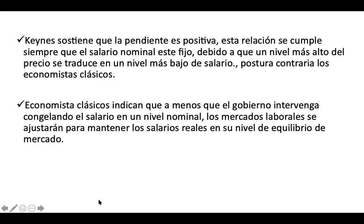La teoría económica de Keynes aparece en los años 20, después de la Primera Guerra Mundial y antes de la gran recesión económica que sufrió Estados Unidos en los años 30. Él dice: si ves que la economía está estancada, lo que tienes que hacer es intervenir y con eso generas producción. John Maynard Keynes sostiene que todos estos efectos van a hacer que el salario interno que reciben las personas se mantenga fijo.